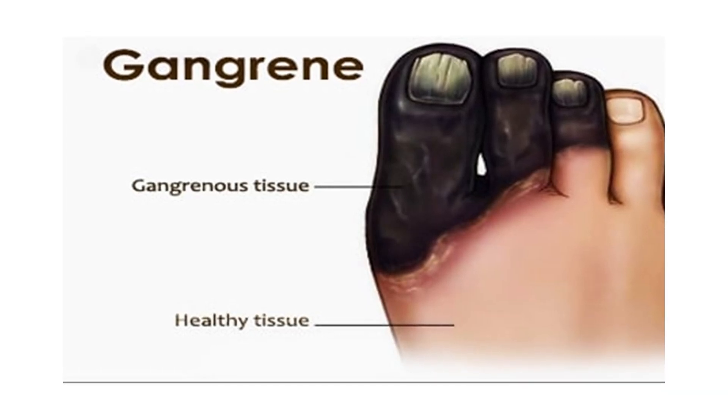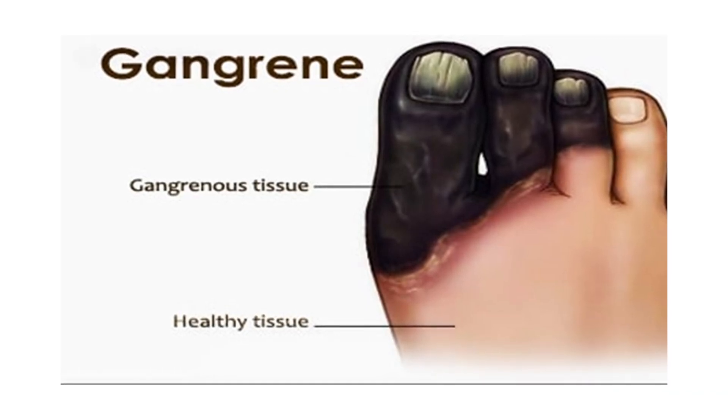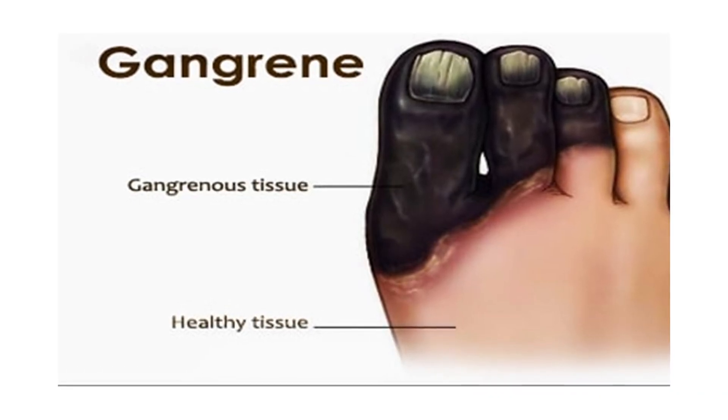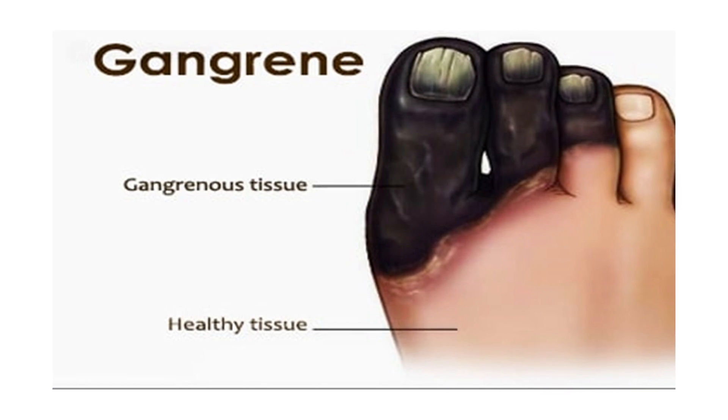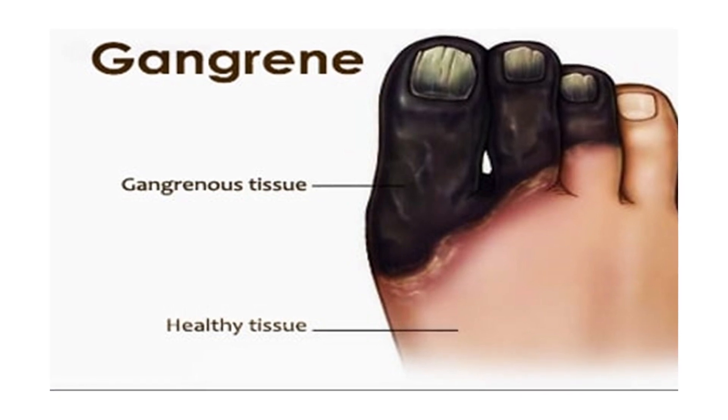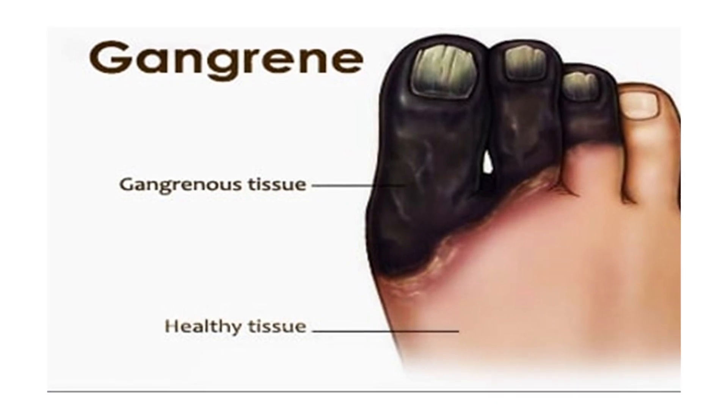Gangrene is a type of tissue death caused by a lack of blood supply. It is not a disease itself, but a symptom of other diseases. It can be classified as dry, wet, gas, or internal gangrene.